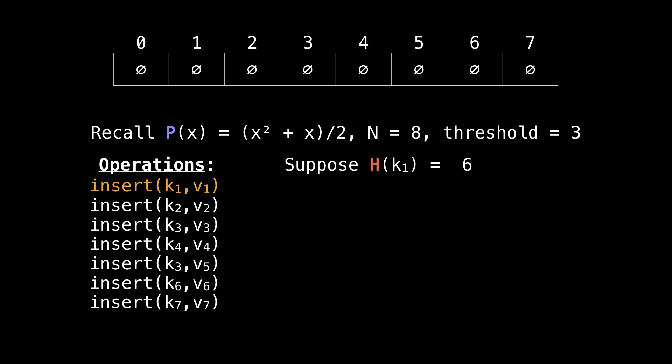Okay, so let's insert the first element. Suppose that k1 hashes to 6, then we're going to insert k1 at position 6.